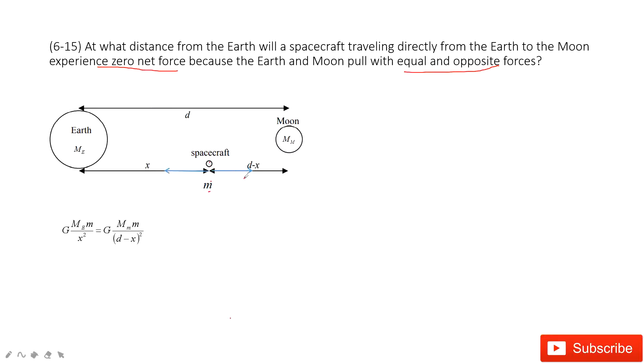So how can we write them? Very clear. The gravitational force for the Earth is this one, the G, this mass times this spacecraft, divided by the distance between them, X. Agree? And then,